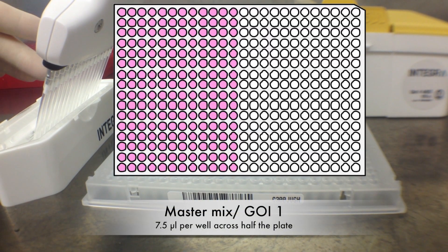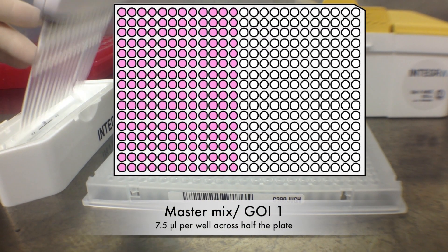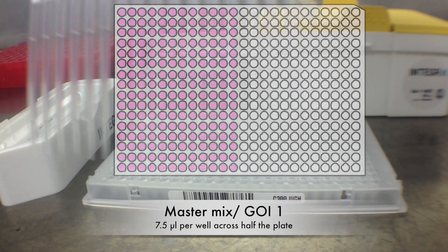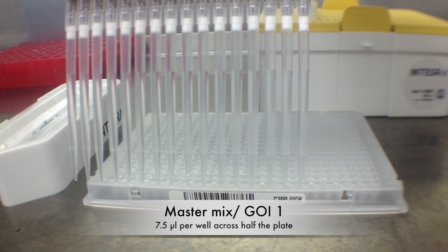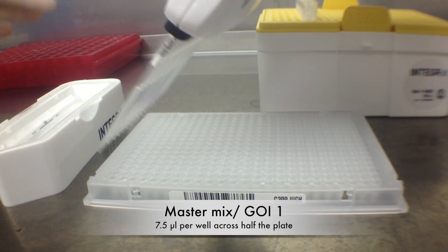Here you can see the layout of my 384-well plate. I want my Gene of Interest master mix to go on the left-hand side. After checking the level of fluid in each of the tips, I then plate it out 12 times.